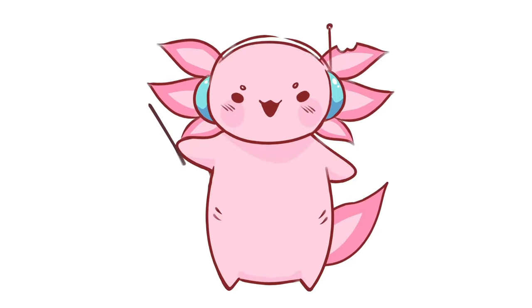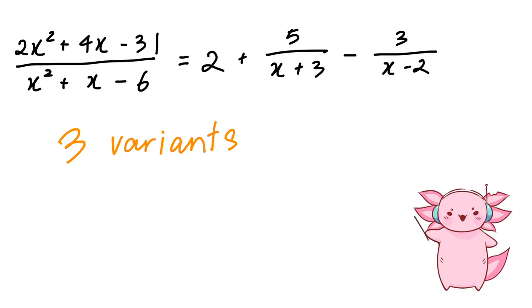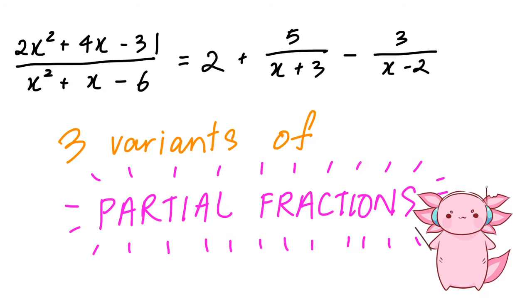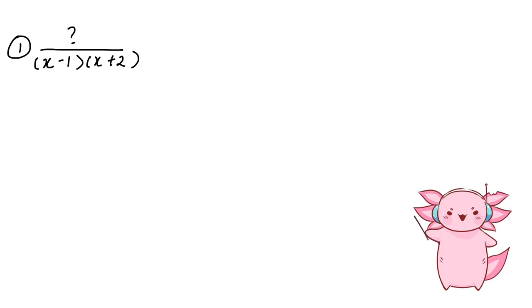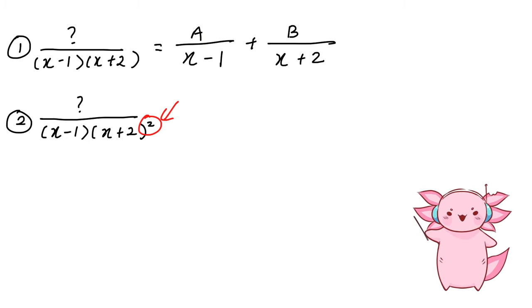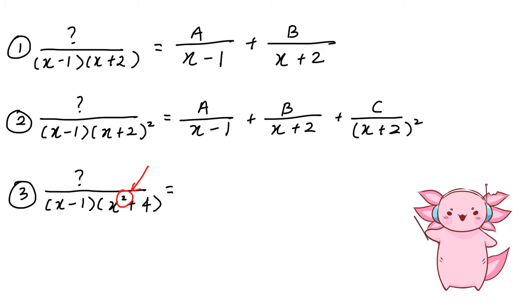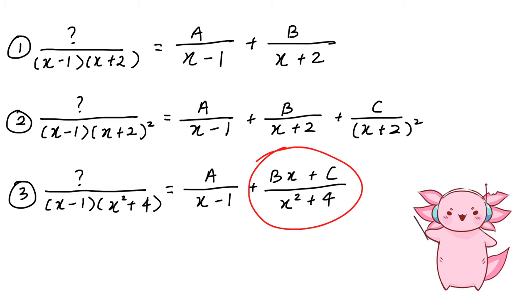The whole idea of partial fractions is taking a complicated fraction and splitting it into a few smaller parts. You need to memorize three formulas. The first is the easiest, where there are just two brackets and we split into A and B. The second is where the square is outside the bracket — note the B term doesn't have the square but the C term does. The last is where the square is inside the bracket, so you see x-squared, and the other term is Bx + C.